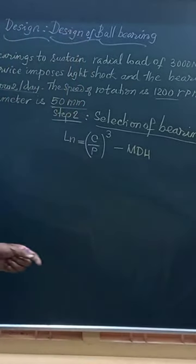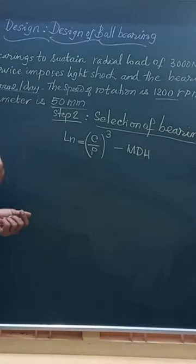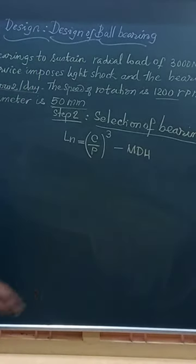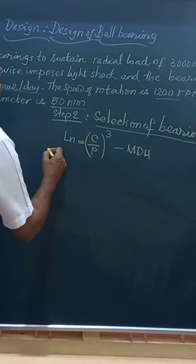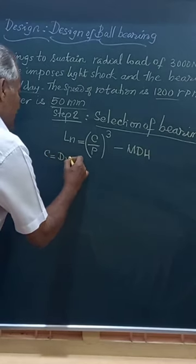That Ln is equal to or greater than 798.4 in this problem. So here, friends, C stands for the dynamic capacity.